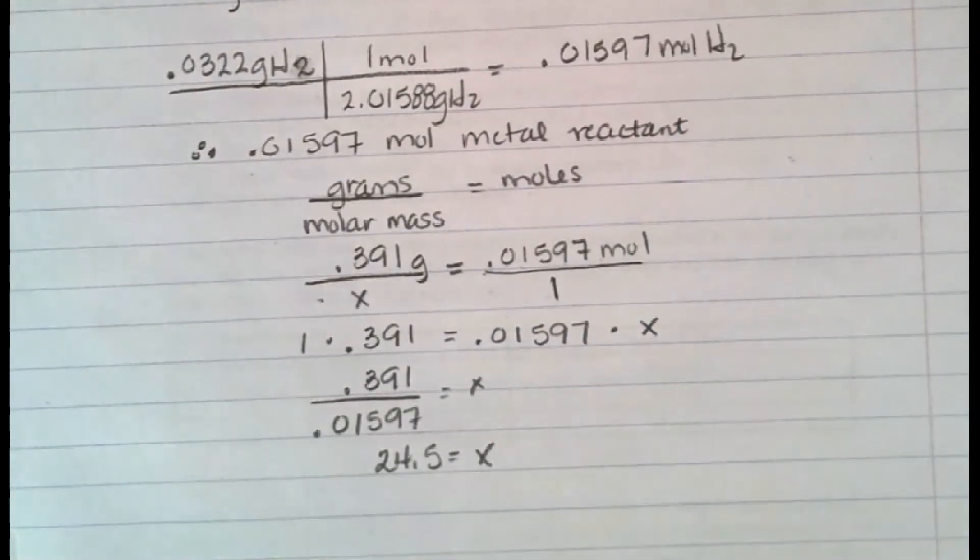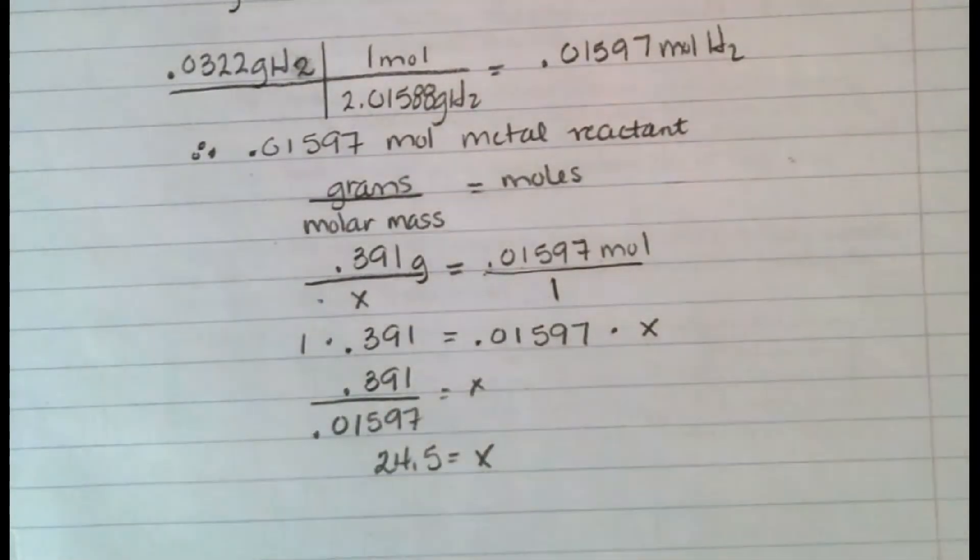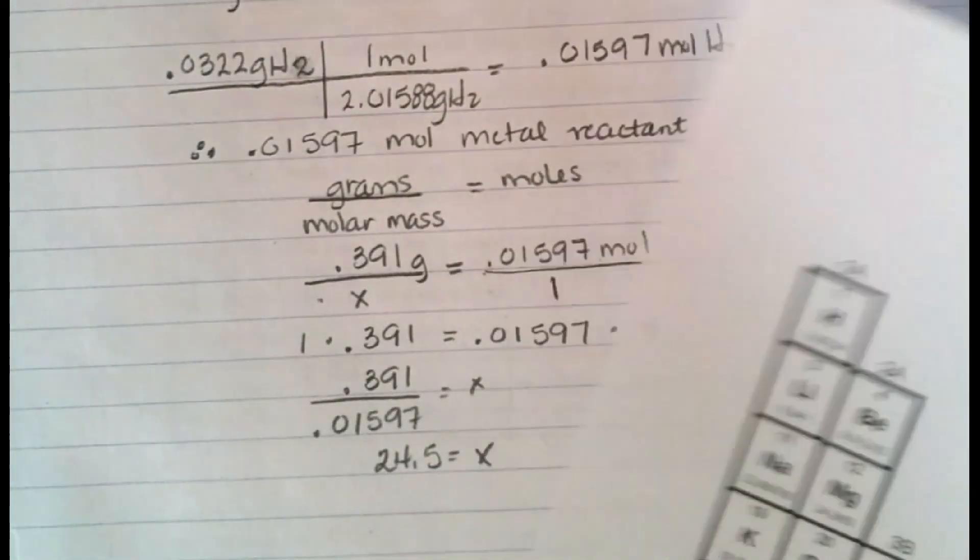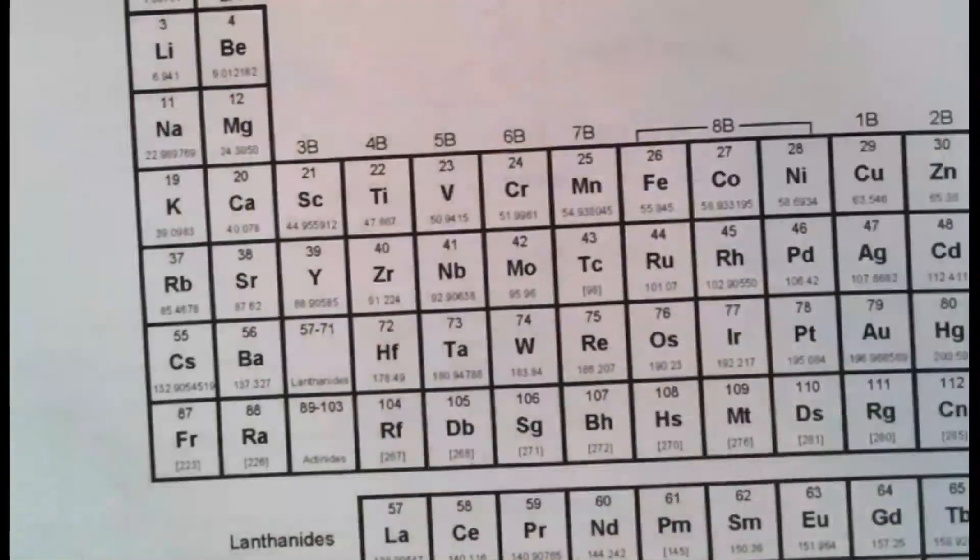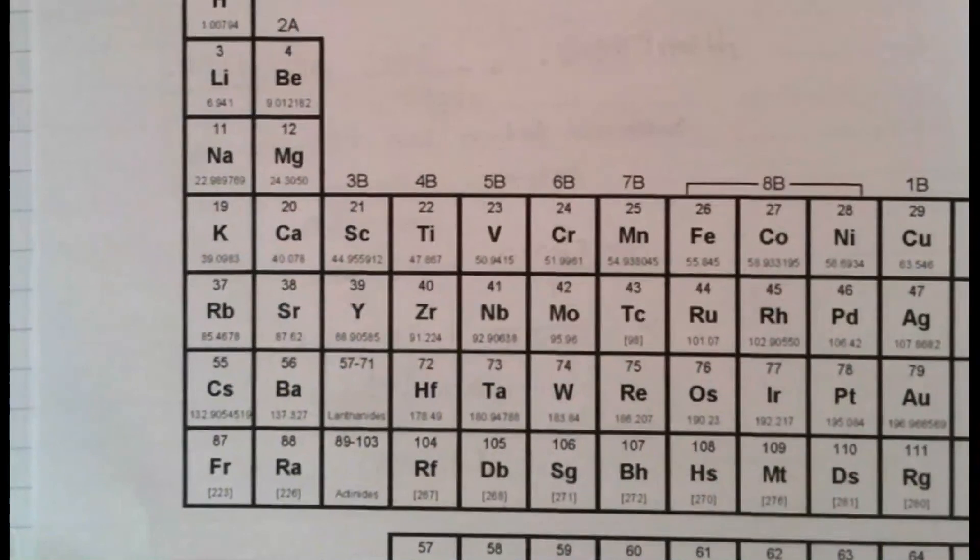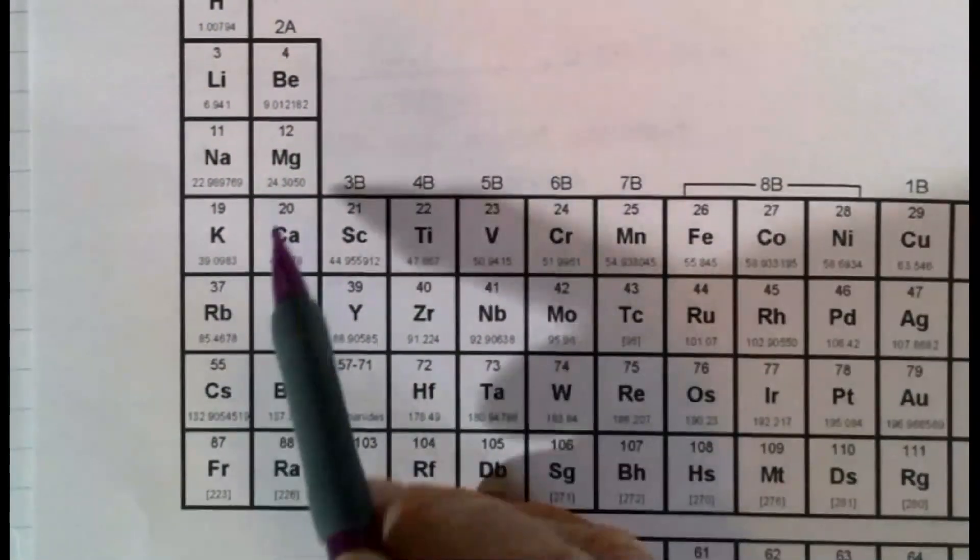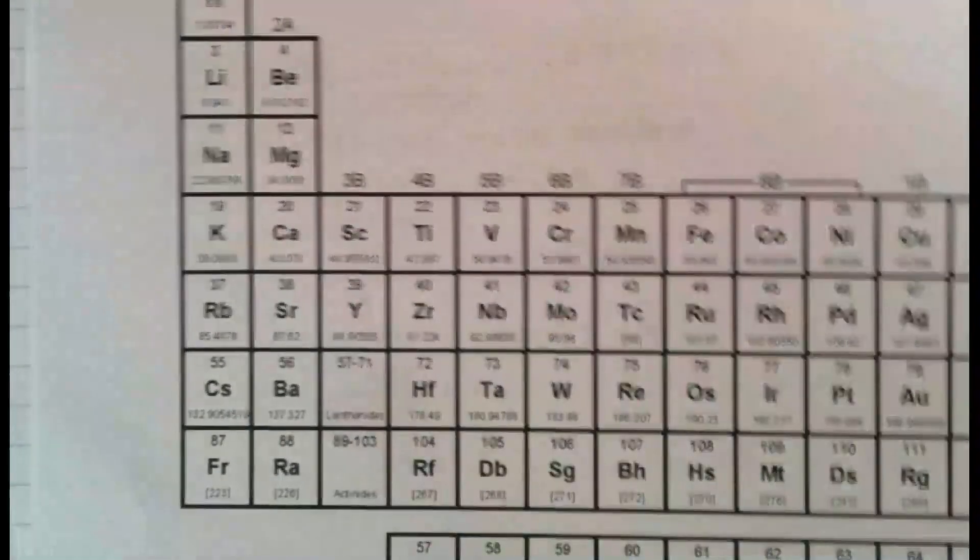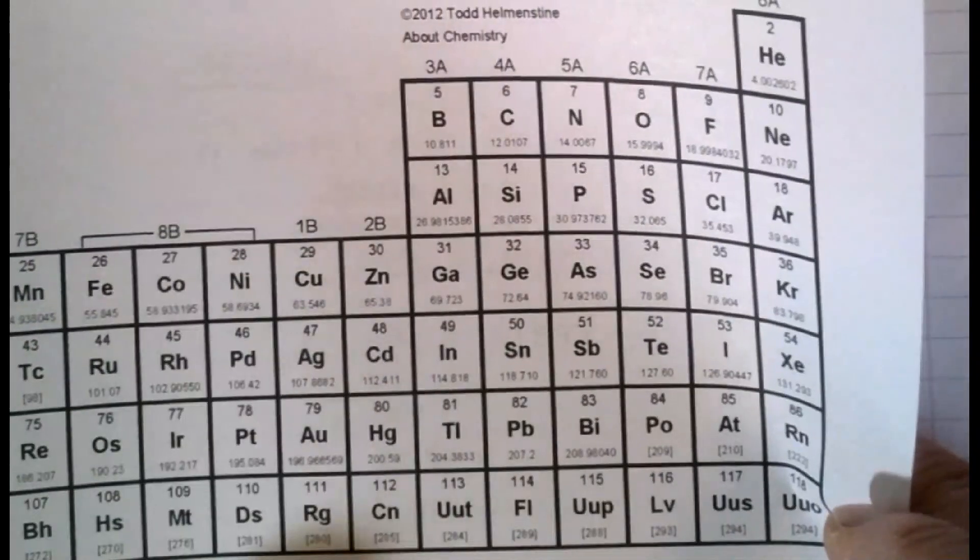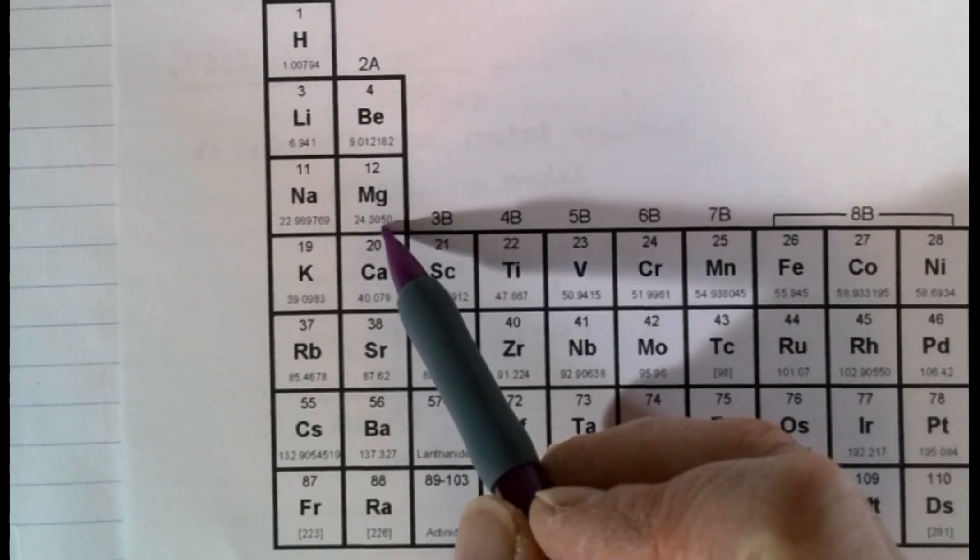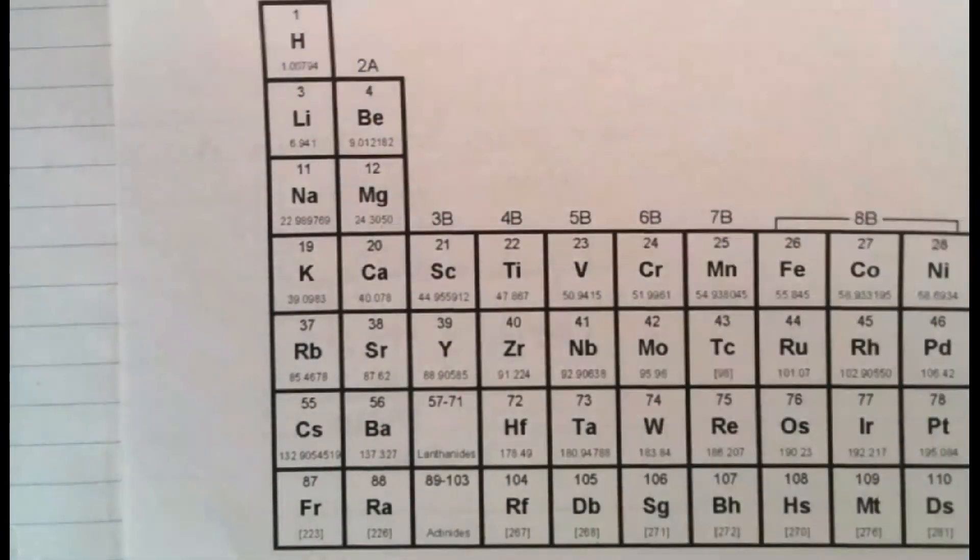So I take out my handy-dandy periodic table, one that has molar mass on it, and I'm going to locate it. So I knew to probably start over at this end. I know this doesn't look like the one that we have, but this is the one I have here. And magnesium is 24.3050, and aluminum is already up to 26.98. So I can, with confidence, I can say that the element is more than likely magnesium.